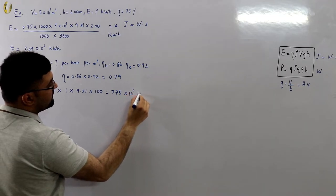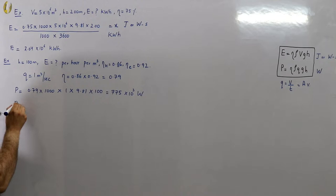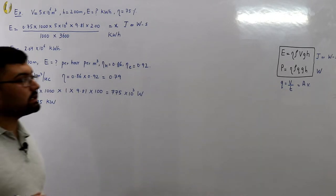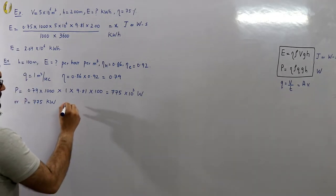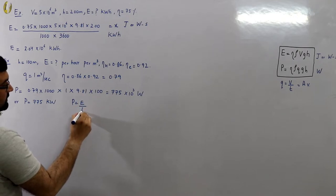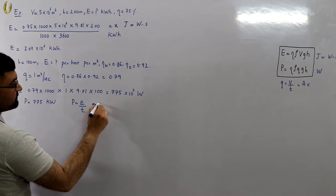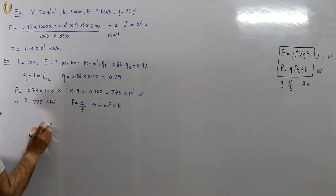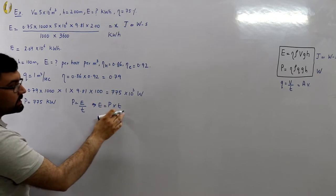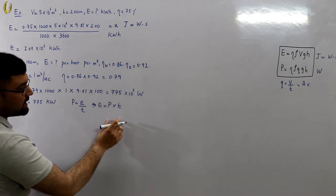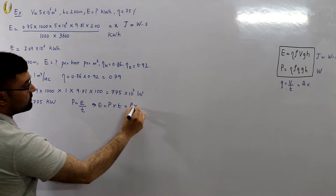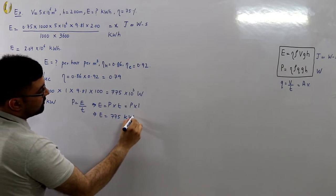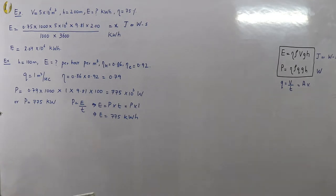That is 775 kilowatts. We are asked for the energy units, and since energy equals power times time, and we need energy for one hour, we multiply the power by one hour. So energy = 775 kW × 1 hour = 775 kilowatt-hours.